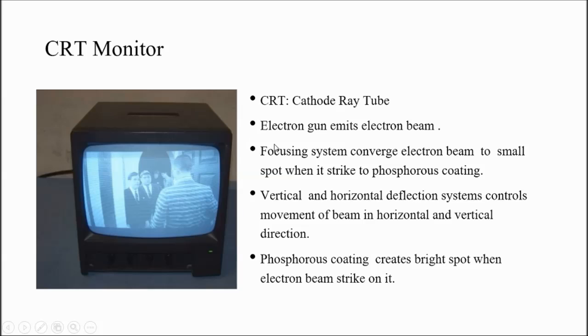Here we can see the electron gun which emits the electron beam, then the focusing system which is used to convert the electron beam to a small spot when it strikes the phosphorus coating. Then vertical and horizontal deflection systems which control the movement in horizontal and vertical directions. And phosphorus coating which creates bright spot when electron beam strikes on it. That is the working and construction of CRT monitors.